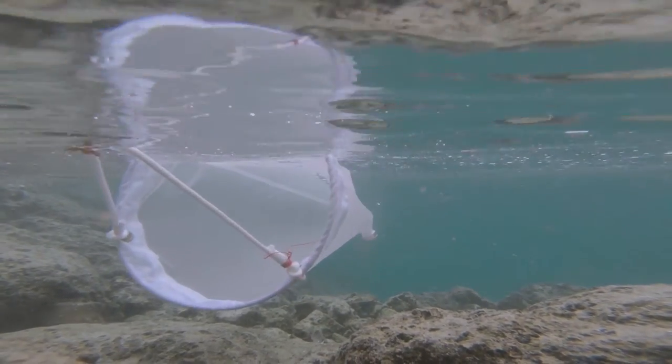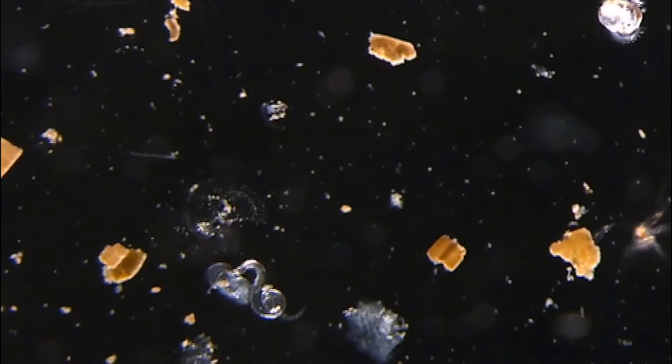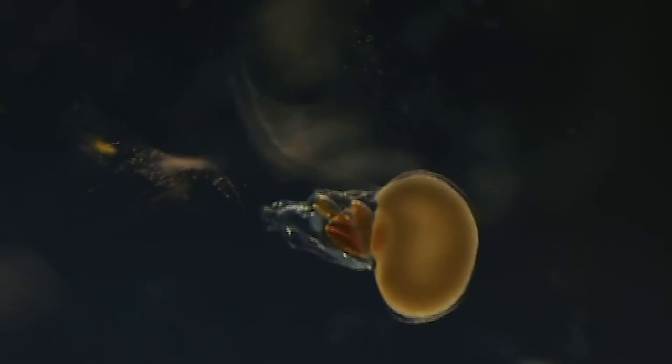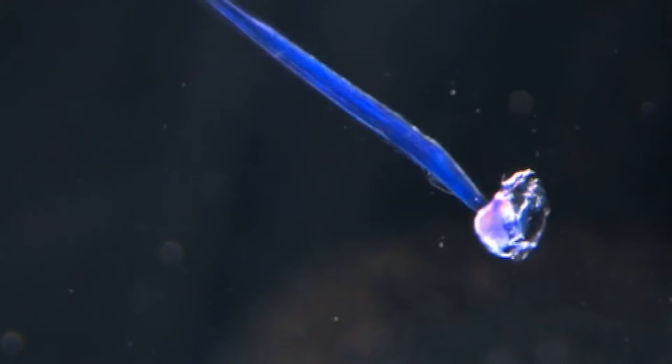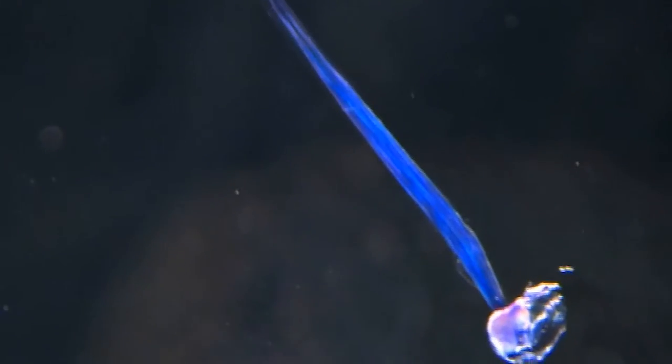OIST scientist Aki Masunaga is rearing tiny titans, a plankton called Oicopleura. But why? Because they have a lot to teach us about biology in many animals.